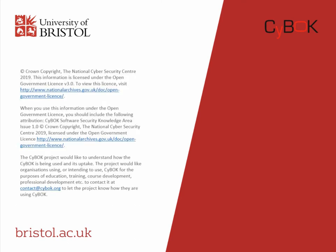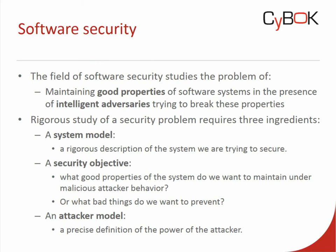So what is software security? A general definition could be that this field studies the problem of maintaining good properties of a software system in the presence of intelligent adversaries trying to break these properties. The intelligence is important here — in software security, we assume that the attacker is a strategic, intelligent entity who understands the system under attack and tries to find ways of breaking the properties that defenders are trying to maintain. To rigorously study any security problem, including a software security problem, you typically need three ingredients.